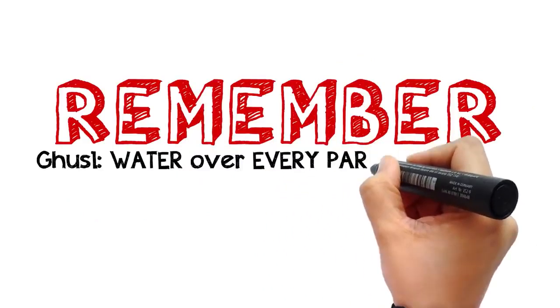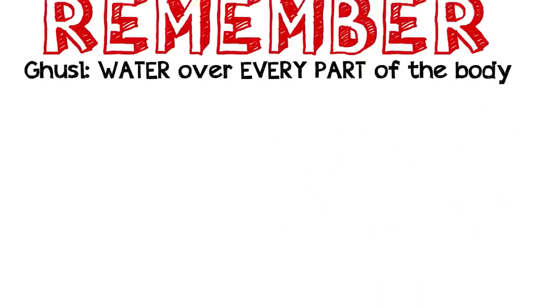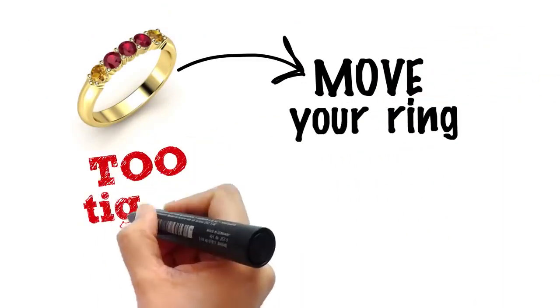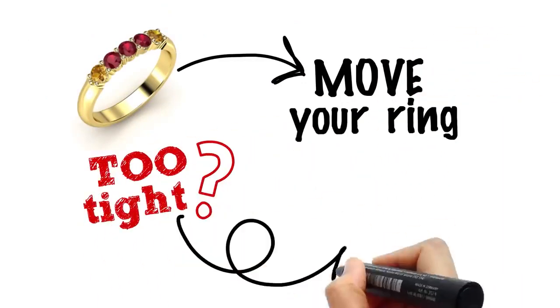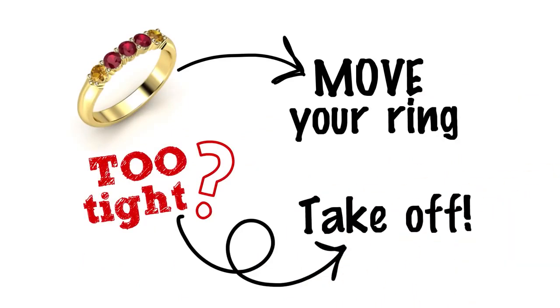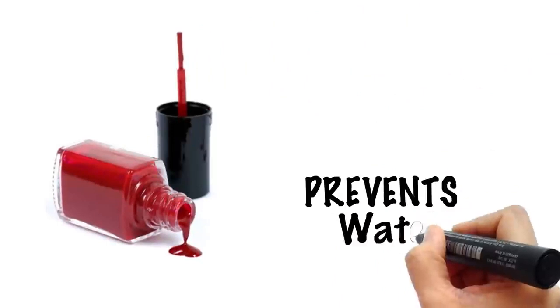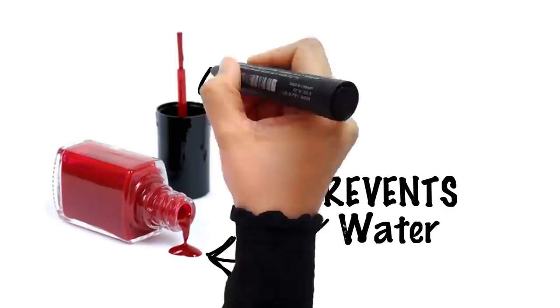Ghusl essentially means letting water run over every part of your body. So if you are wearing a ring, you should move it, and if it is so tight that the water won't reach the skin underneath, then you have to remove it. Cosmetic items which form a barrier and prevent the water from reaching your skin...